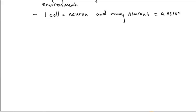And many neurons equal a nerve. So if you bundle the neurons together, it becomes a nerve. And there's an estimate that we have approximately 100 billion neurons in our nervous system. Most of which are in our brain.